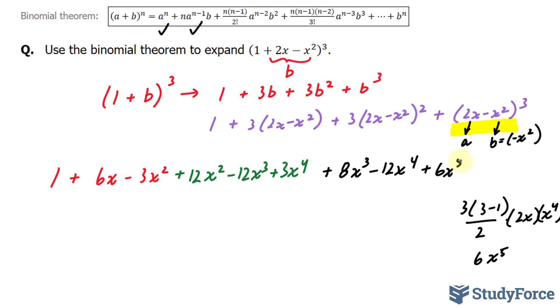And finally, for our last term, we have b to the power of n. So this to the power of 3 will give us -1, x⁶.